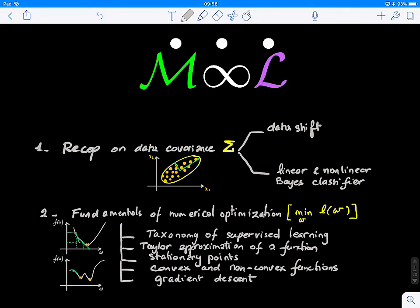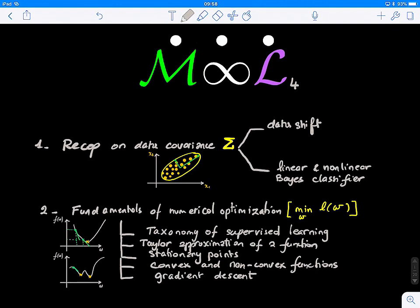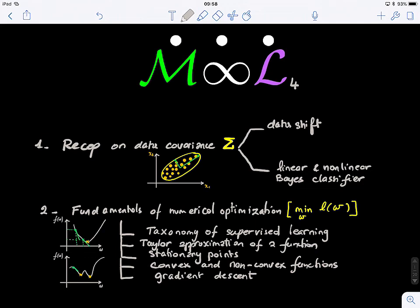Welcome to a lecture on machine learning. Today we'll look at a recap of data distribution — how important data distribution is in solving machine learning problems, what data covariance and mean tell us about data shift, and how we can define a classifier based on covariance and means of each class. Then we'll look at numerical optimization in machine learning.